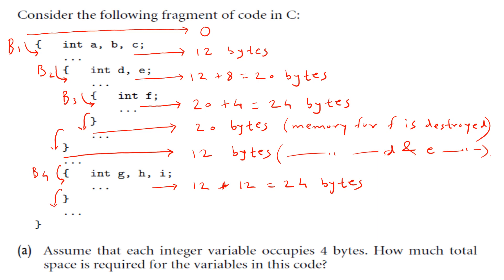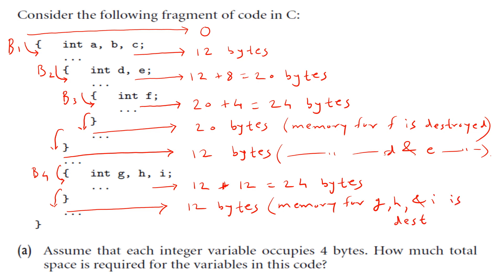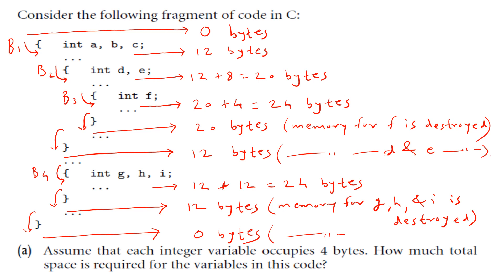Then when you exit from block four, total memory will go back to 12 bytes, since we come out of block four and memory for g, h and i will be destroyed. And then finally when you come out of block one itself, the total memory would be zero bytes, as memory for a, b and c is also destroyed.